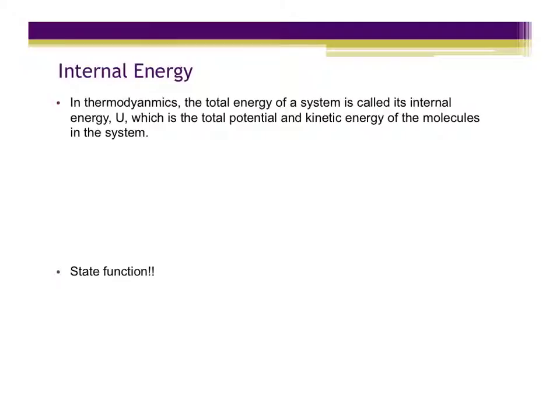The way that we describe the total energy in a system is through the state function, the state variable U, which is the internal energy. The internal energy is the sum of all of the total potential and kinetic energy contributions to the system. We can't explicitly measure the internal energy of the universe, but what we can do is measure the change in internal energy when we go from an initial state to a final state. What we actually measure in the practical world is the change in internal energy, which is equal to delta U — the final internal energy minus the initial internal energy.